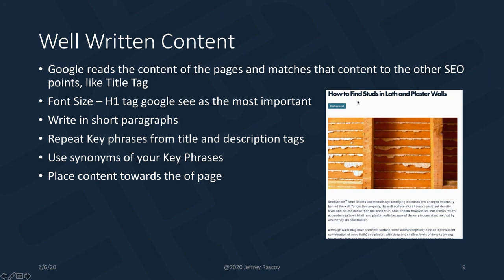Here's an example. Google likes big font size — the biggest font size is called H1, and usually that's at the very top of the page. Looking at my example, it describes what this page is about: 'finding studs in lath and plaster walls.' It's probably one of my highest-ranking pages — big, bold text at the top. Then write text in short paragraph form, including some of your important key phrases like 'stud finders,' 'lath and plaster,' 'walls.' Repeat the same words in the title, description, and the content of the page.